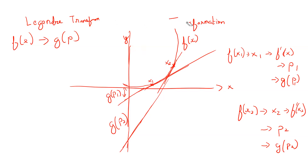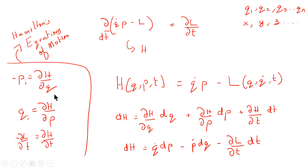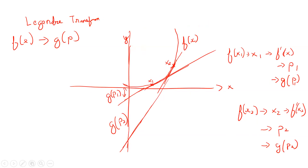Just to recap: we have derived Hamilton's equations of motion — this is what is most important to remember — and we have told you that the Hamiltonian can be obtained by the Legendre transformation, and given you a brief geometrical understanding of what the Legendre transformation does. Hope you liked this video and found it useful. Thank you for watching.